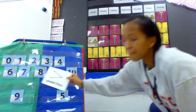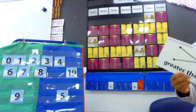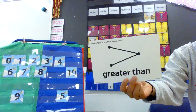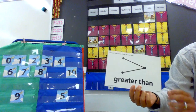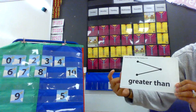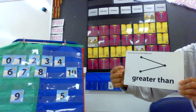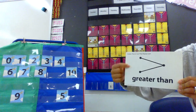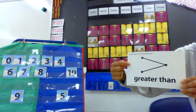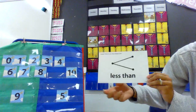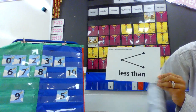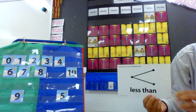So the purpose of this is to make sure we know these symbols. Remember, the open mouth alligator is always towards the bigger number. For greater than, the greater number is always to the left. For less than, the smaller number is on the left. Good job today, boys and girls — enjoy the rest of your day. Bye!